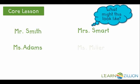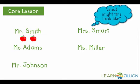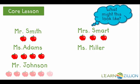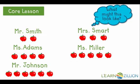We can see Mr. Smith has two apples. Mrs. Smart has three. Mrs. Adams received four apples. Mr. Johnson received six, and Mrs. Miller received five.